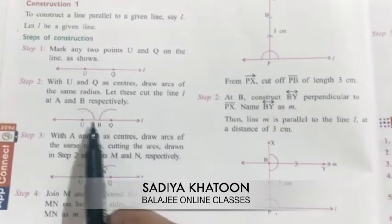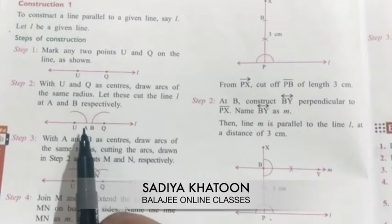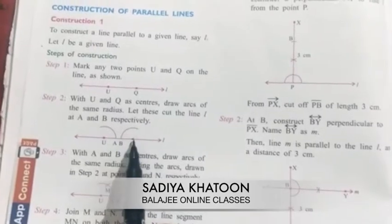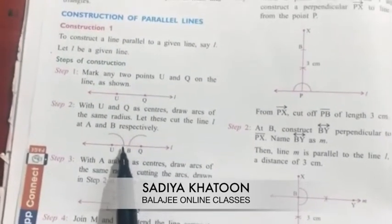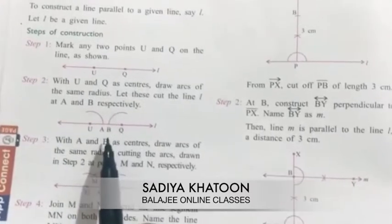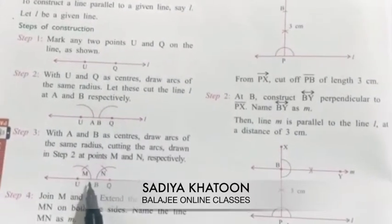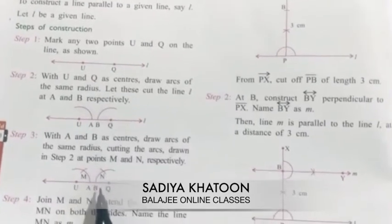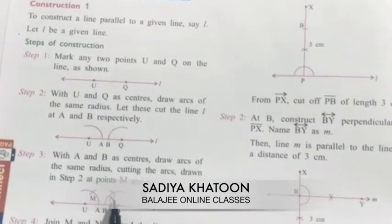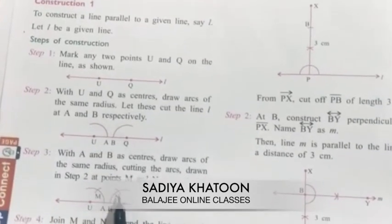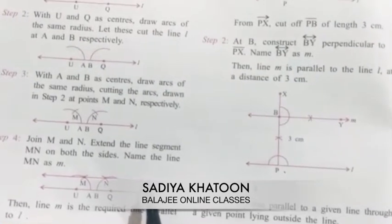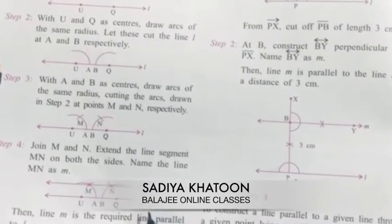To draw the parallel line, you take two points on the given line. Then using the compass needle, you draw a semicircle. From point A, you choose the compass needle and perform the same arc. You join the two points you get, and that line M will be parallel to line L.